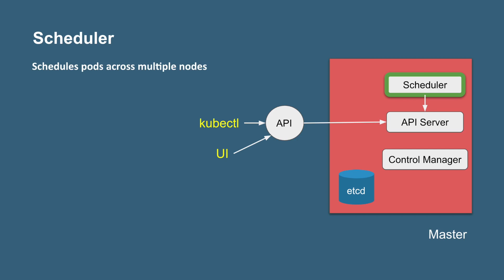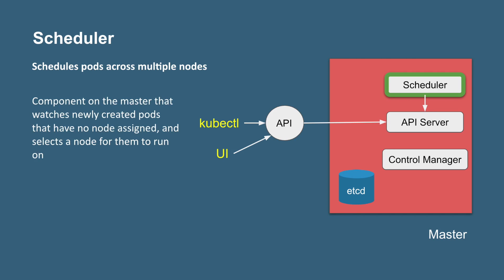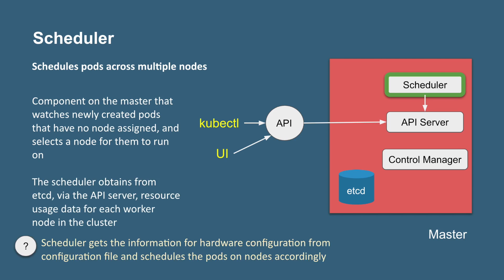The scheduler is a component that schedules pods across multiple nodes. Worker nodes can be physical or virtual machines and can have different hardware configurations. The scheduler knows about these configurations, and whenever it has to schedule a pod, it checks which node best fits the hardware requirements of that pod and schedules it accordingly. It watches newly created pods that have no node assigned and selects a node for them to run. An important point for interviews: the scheduler gets all information from configuration files and indirectly from the etcd data store.